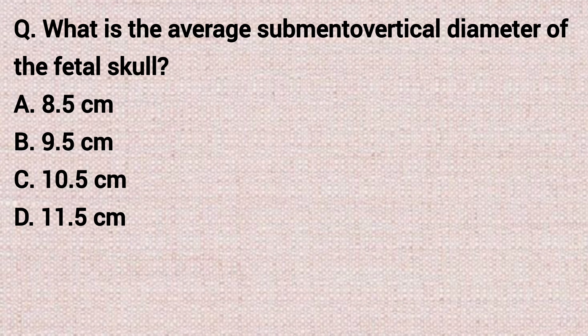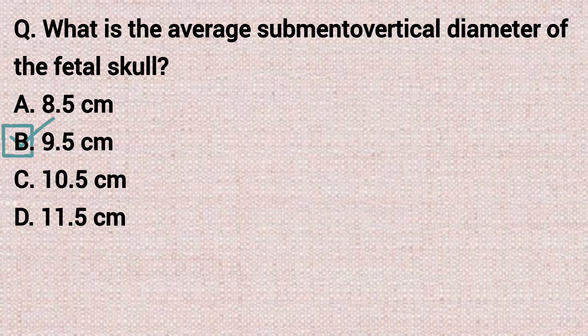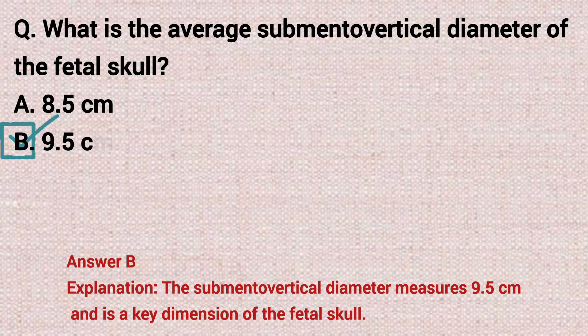The next question: what is the average submentovertical diameter of the fetal skull? Option A: 8.5 cm. Option B: 9.5 cm. Option C: 10.5 cm. Option D: 11.5 cm. The correct answer is option B, 9.5 cm.